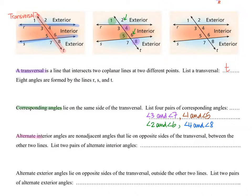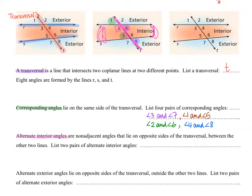Another new term is alternate interior angles. These are angles that are non-adjacent and lie on opposite sides of the transversal, between the other two lines — that is, on the interior. Examples of alternate interior angles are four and five, and three and six.